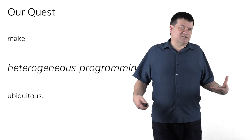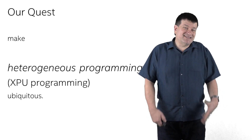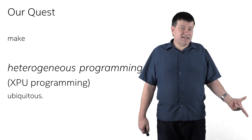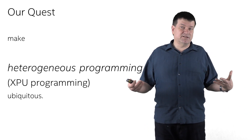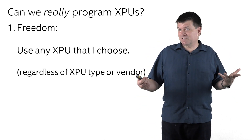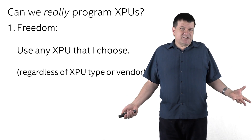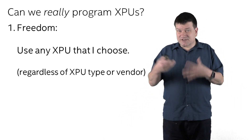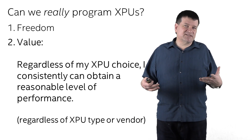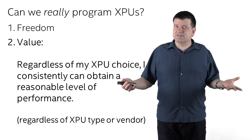Let's return to talking about our shared quest to make heterogeneous programming ubiquitous. At the heart of heterogeneous programming is XPU programming. I will offer up three critical tests for seeing if we are really free to program XPUs — and I mean free as in freedom, not as in free beer. Number one, are we free to use whatever XPU we choose, regardless of the type or the vendor? Number two, regardless of my choice, can I consistently get value out of an XPU? Do I get reasonable performance, again regardless of type or vendor?